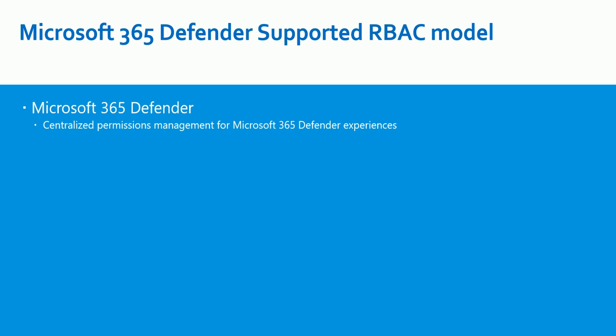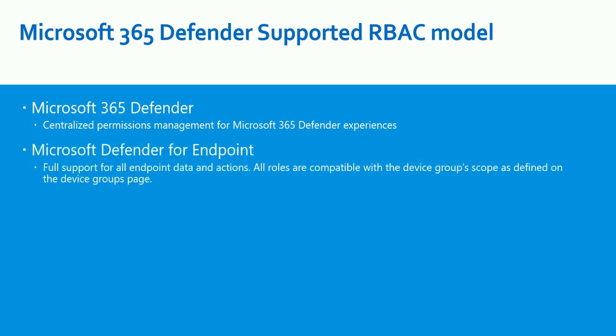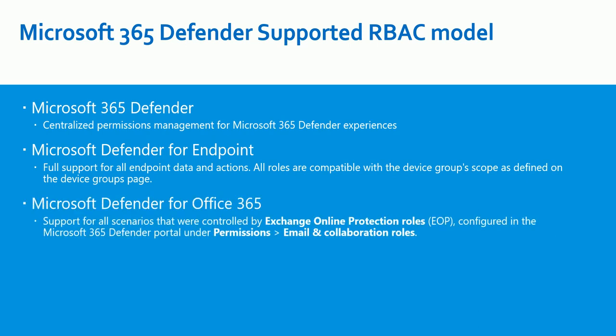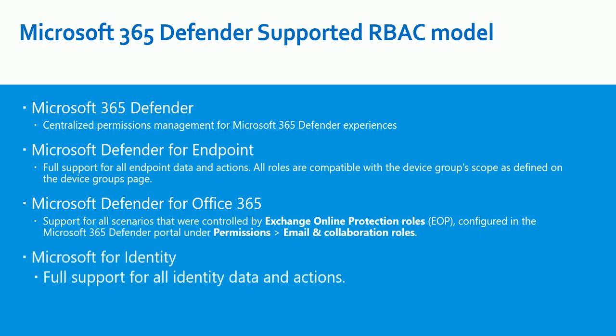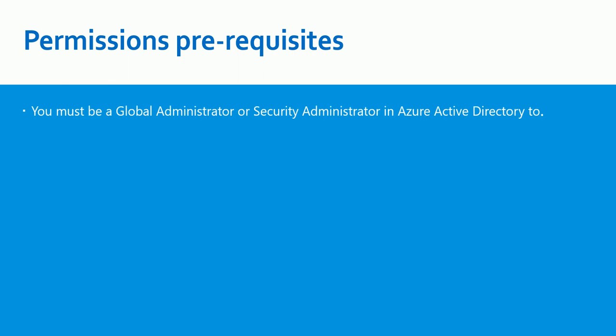Through Microsoft 365 Defender, we can control centralized permissions for all applications. We can control Microsoft Defender for Endpoint permissions with full support for all endpoint data and actions. All roles are compatible with device group scope, defined on the device group page. We can also control RBAC for Defender for Office 365 and Defender for Identity.